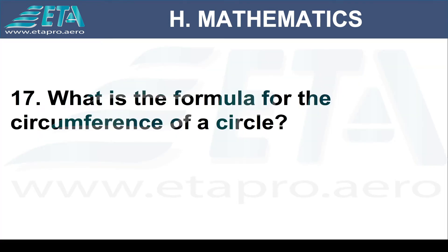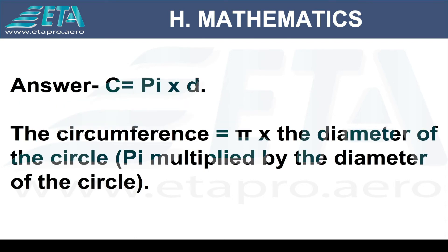What is the formula for the circumference of a circle? The circumference equals pi times the diameter of the circle.